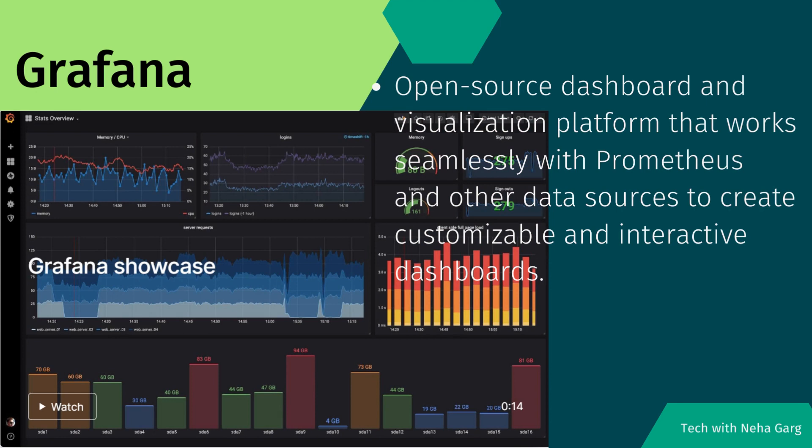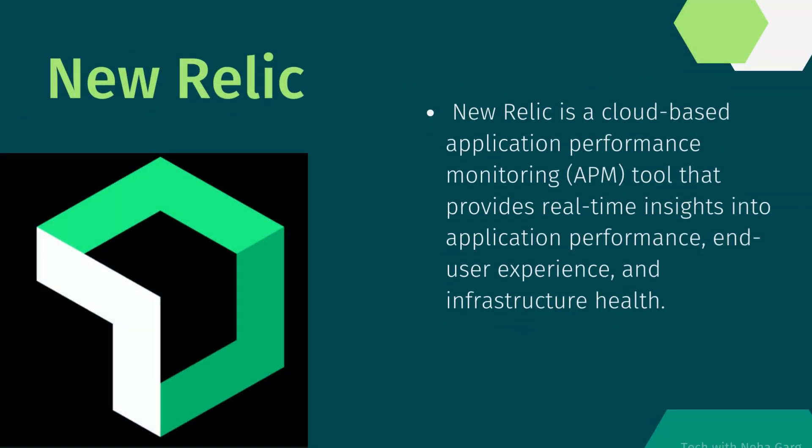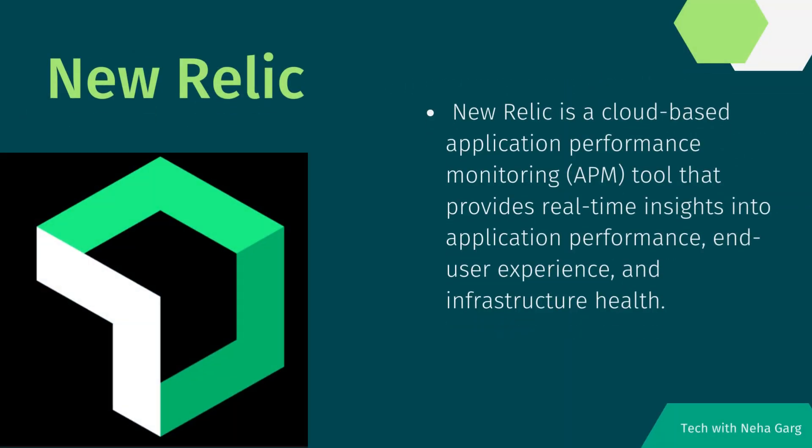The next tool is Grafana. Grafana is an open source dashboard and visualization platform that works seamlessly with Prometheus and other data sources to create customizable and interactive dashboards. It is known for its ease of use and ability to create aesthetically pleasing dashboards. Grafana supports a wide range of data sources and integrations and provides features such as alerts, annotations, and real-time streaming.